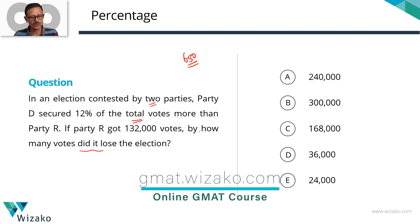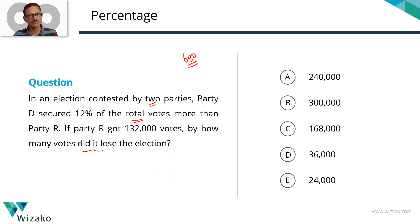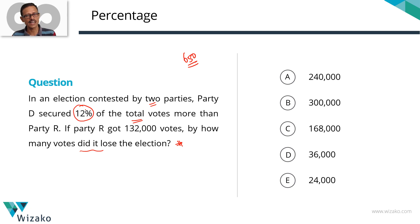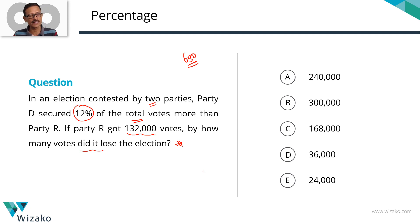What do we need to find out? We need to find out the margin of defeat in number of votes. We already have the margin of defeat in terms of percentage of votes — 12%. So we need to find out what 12% of the total votes translates to in number of votes. We have the number of votes polled by party R, so if we can find out what 132,000 votes represents as a percentage, we can find out the answer.